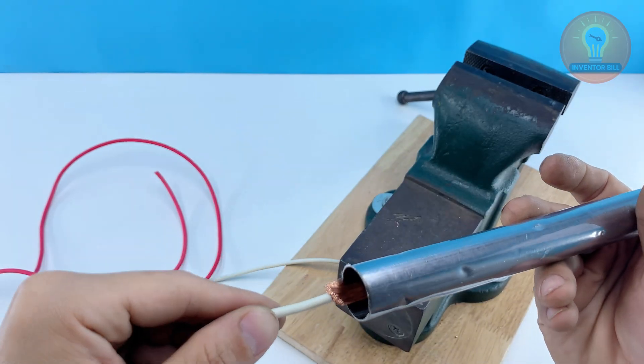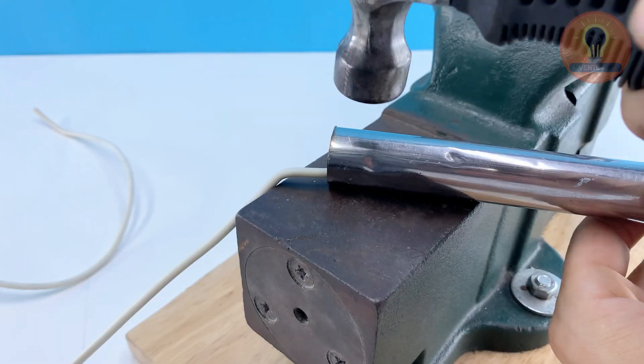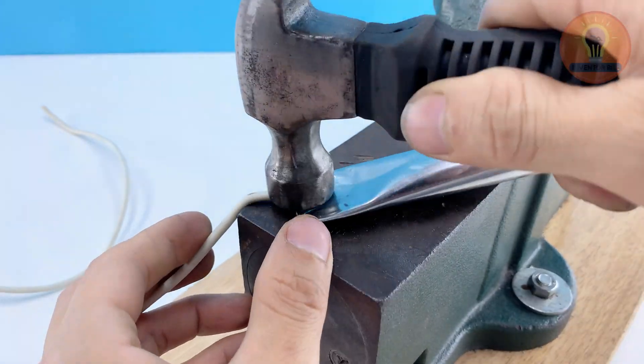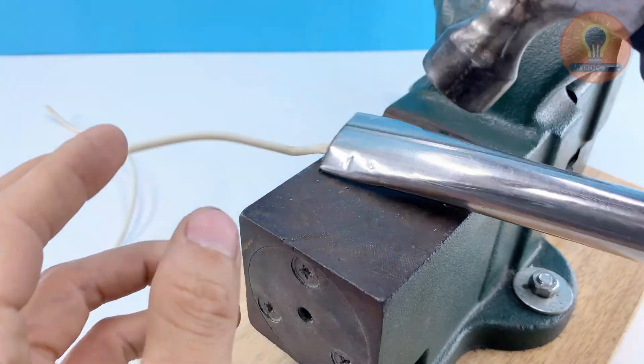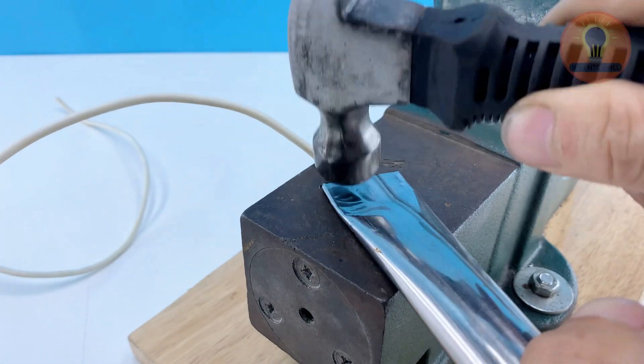Then slide that bare end into a thin aluminum tube about two inches long. Once it's in place, tap the tube on a firm surface and gently tap it flat with a hammer. This locks the copper wire tightly inside so it won't loosen when the heat builds up.